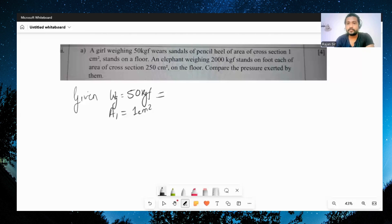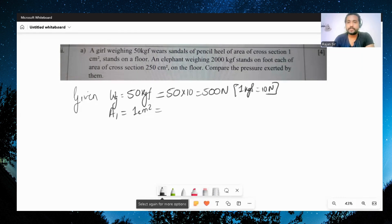So let's start with the girl. The weight of the girl is 50 kgf, which is 50 times 10, so that is 500 newton, since 1 kgf is equal to 10 newton. And 1 centimeter square will become 1 times 10 raised to minus 4 meter square, since 1 centimeter square is equal to 1 upon 10000.